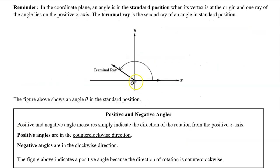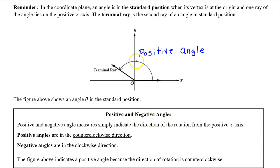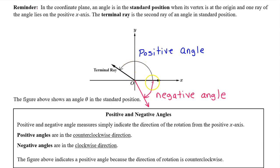In a previous video, we learned that an angle is in standard position when the vertex is at the origin and one ray is on the positive x-axis. The other ray is called the terminal ray of the angle. In Precalculus, we work with positive and negative angles. The positive or negative indicates the direction of the rotation from the positive x-axis. A counterclockwise rotation from the positive x-axis is a positive angle, while a negative angle means a clockwise rotation from the positive x-axis.